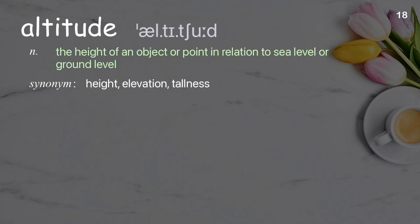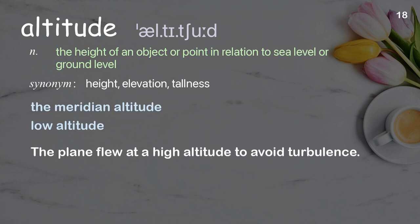Altitude: the height of an object or point in relation to sea level or ground level. Examples: the meridian altitude, low altitude. The plane flew at a high altitude to avoid turbulence.